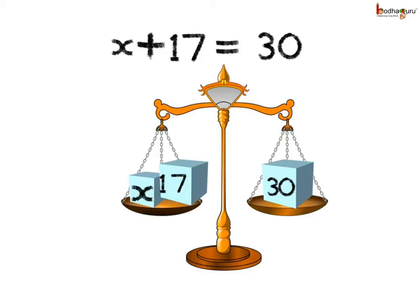So let us try to understand how it is done using a weighing balance. One pan, say on the left hand side, has the weight representing x and 17. On the other pan, say the right side, has weight representing 30. As the weights on both pans are equal, we can say the balance is balanced.